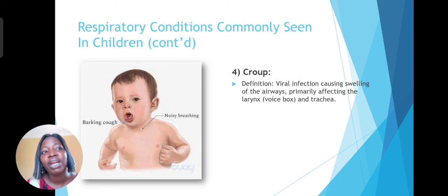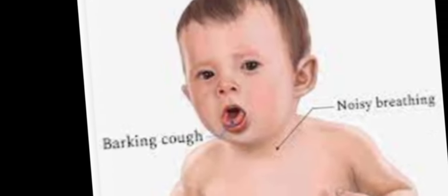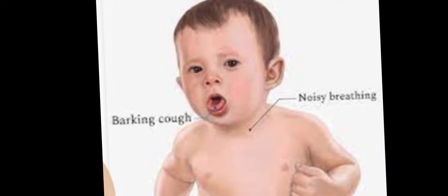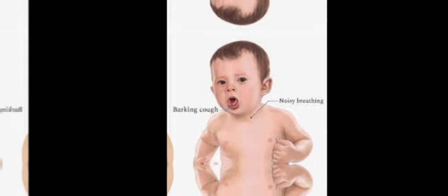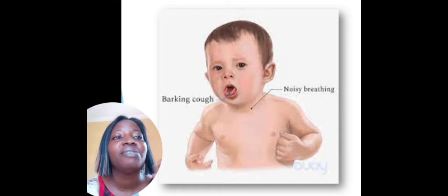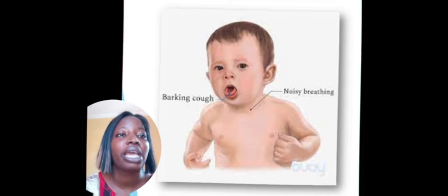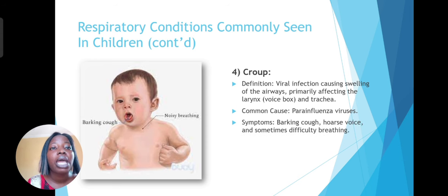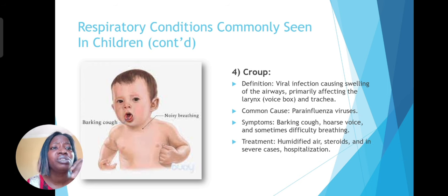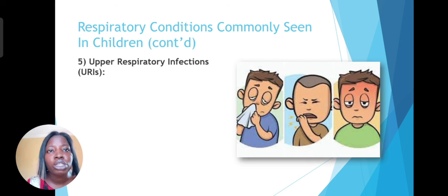And we have croup, which is a viral infection causing swelling of the airways. You have noisy breathing and a barking cough, primarily affecting the voice box and the trachea. The para-influenza viruses cause this particular health condition. Treatment is usually humidified air and steroids, and in severe cases you need to take the child to the hospital.